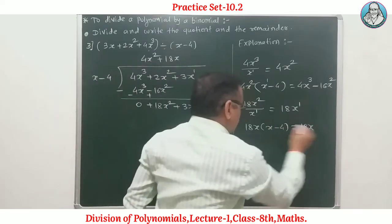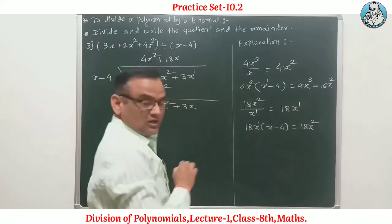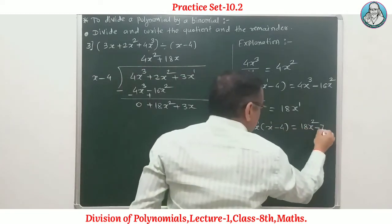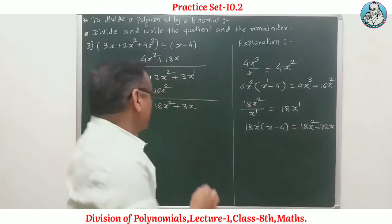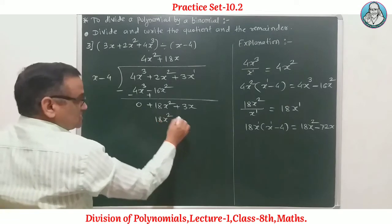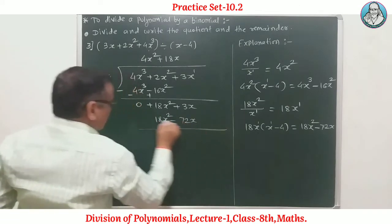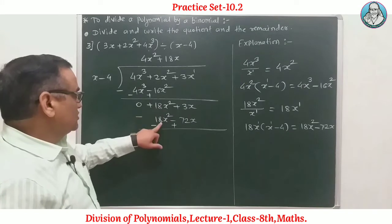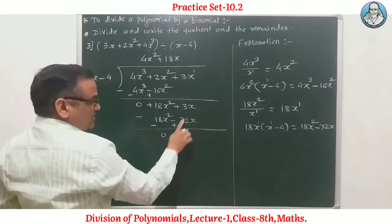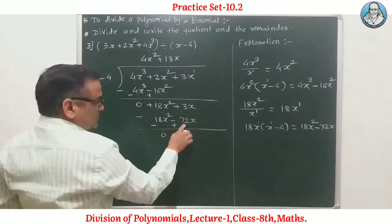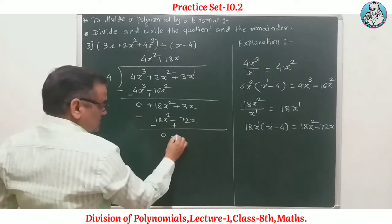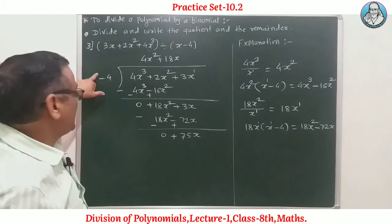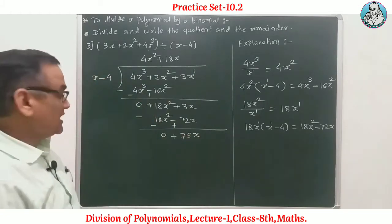Now divide 18x² by x, giving 18x as the next quotient term. Multiply 18x by (x − 4): 18x times x is 18x², and 18x times −4 is −72x. So 18x² − 72x. Perform subtraction: 18x² minus 18x² is 0. Then 3x minus (−72x): positive 72 plus 3 gives 75x.